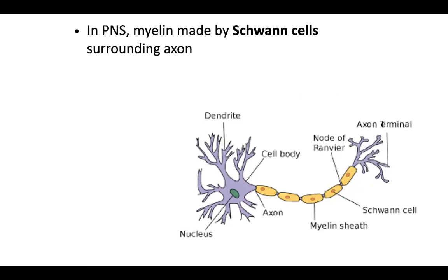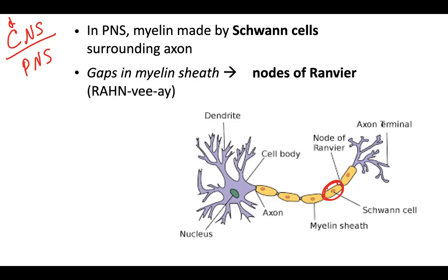In the peripheral nervous system — everything except the brain and spinal cord — the myelin is made by cells called Schwann cells, which surround the axon. The gaps in the myelin sheath are called the nodes of Ranvier. These gaps actually help speed up action potentials in the peripheral nervous system, because the impulse jumps over the myelin sheath and hops to the next node of Ranvier.